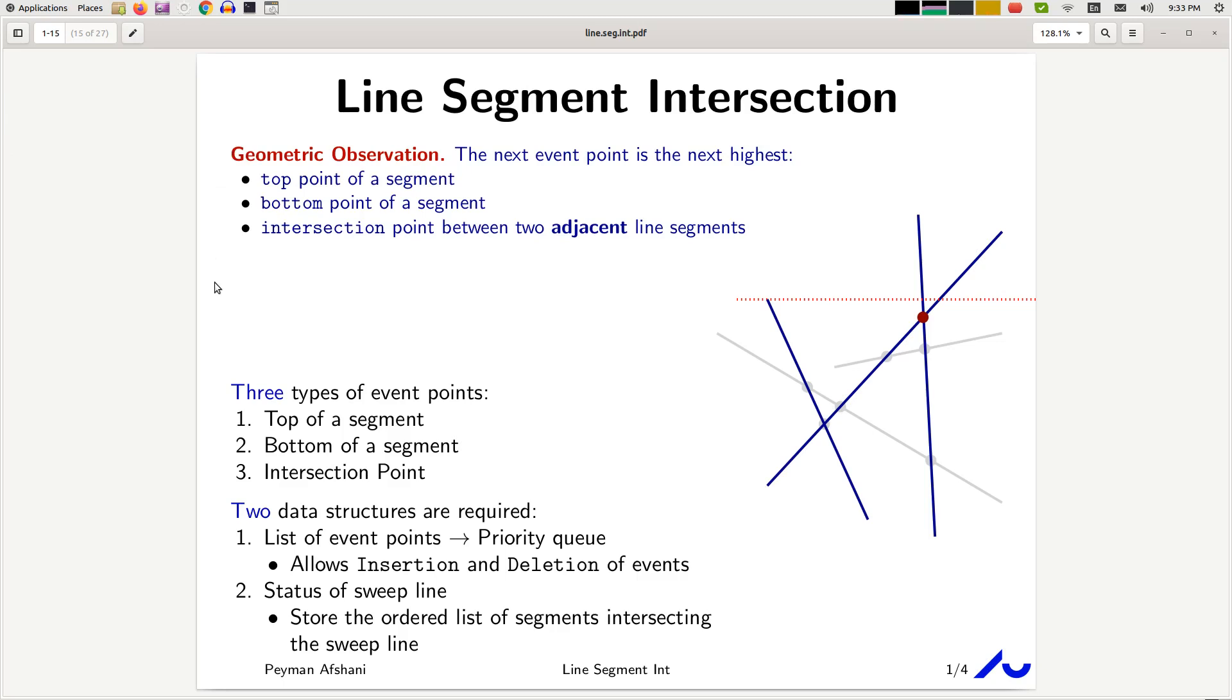So let me explain what this means. Imagine that you have the sweep line over here, you have identified a number of event points - that was the start,